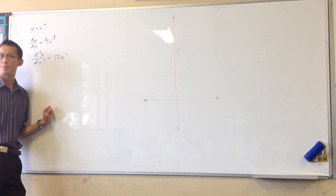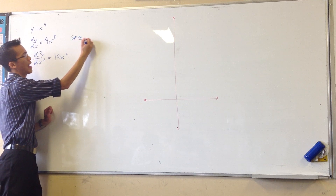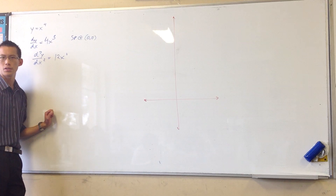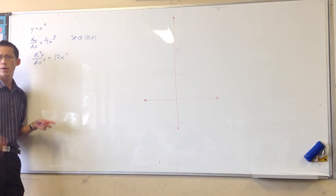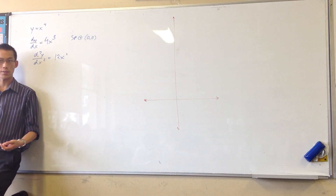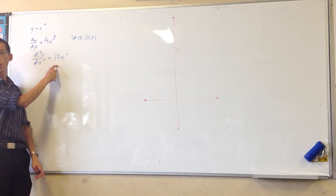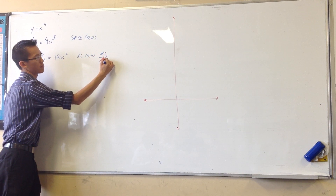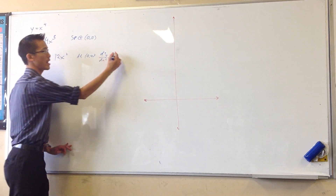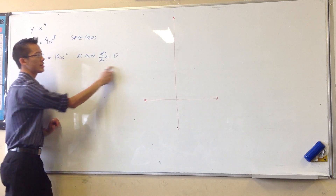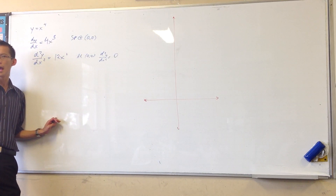And then something weird is happening. We can see that there's a stationary point at the origin. But at the origin, what happens to the second derivative? Because we were thinking: if it's a stationary point, it should be concave up or concave down, and that'll tell us if it's a max or a min. But at the origin the second derivative is just 0. This tells us gradient; this tells us concavity. So this is saying there's no concavity at the origin.